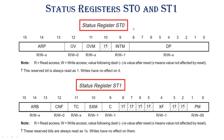Status register ST0 is called ST0. The first 16 bits contain the lower 8-bit DP field.